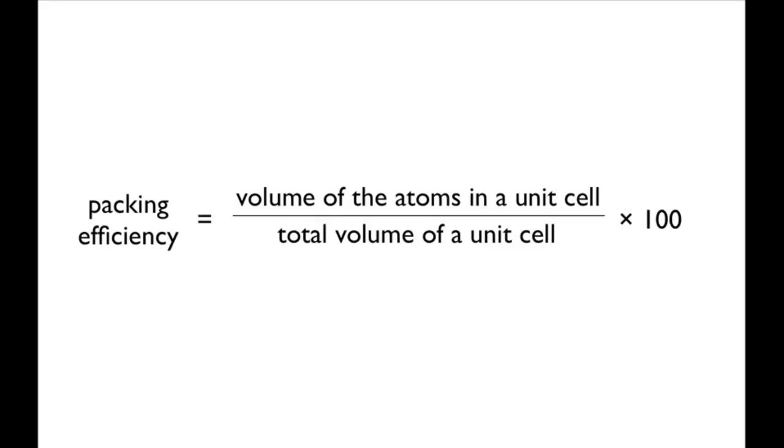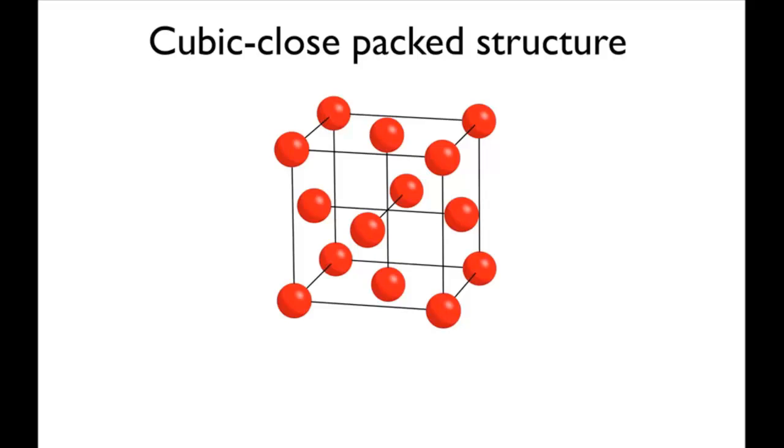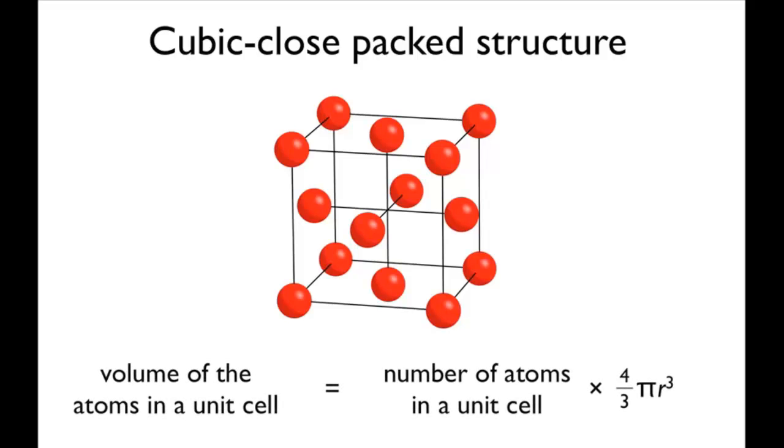In this screencast, we're going to work out the packing efficiency of the cubic close packed structure. Start with the volume of the atoms in a unit cell. This is equal to the number of atoms in the unit cell multiplied by four thirds pi r cubed, which is the volume of a sphere.